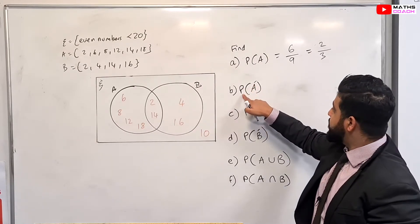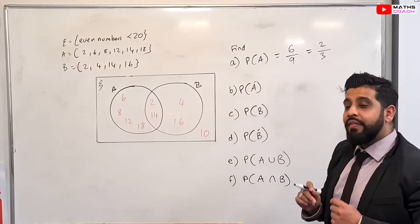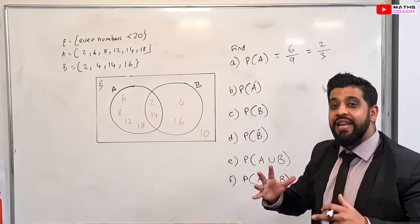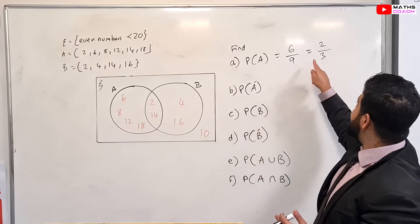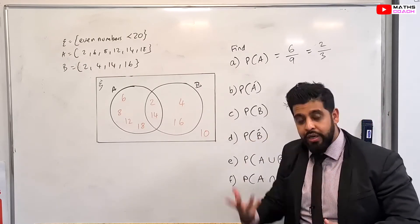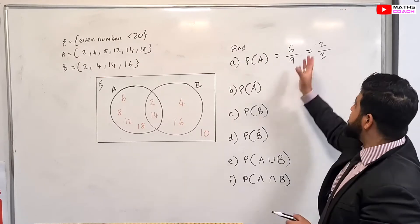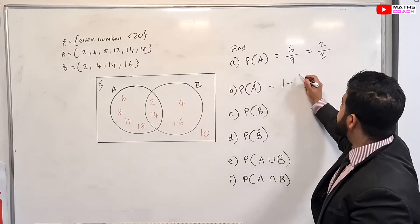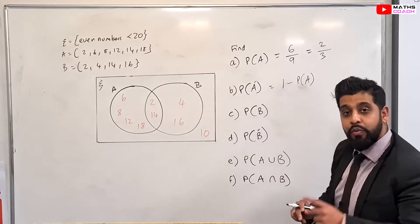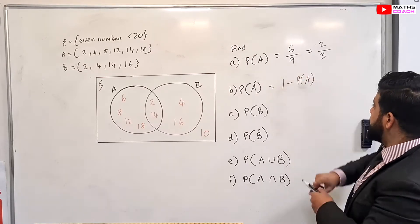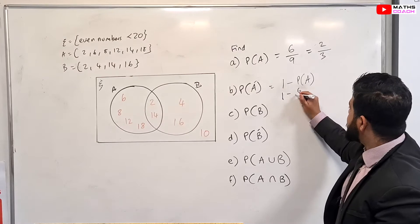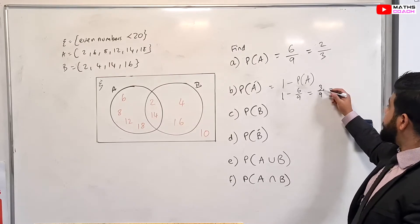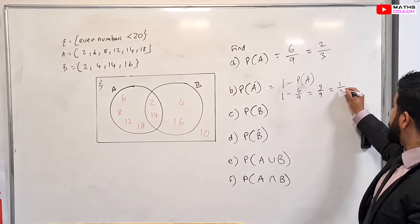Right, now what does this mean? Probability of A with this dash on the top. That means that it's not A. So we want to know the probability of A not happening, the event A not happening. Which is basically, if this is event A, the probability of event A not happening is going to be 1 minus that, because all probabilities are out of 1. We know the probability of A happening is 6 over 9. So it'd be 1 minus 6 over 9, which is basically going to be 3 over 9. Again, that can be simplified further. So divide both sides by 3, you get 1 over 3.